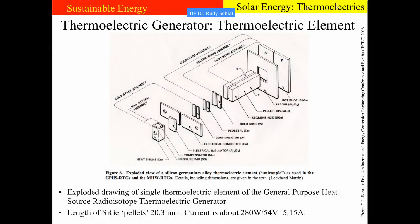Here you see an exploded drawing of a single thermoelectric element of this generator. The most important parts are the P- and N-type slabs of silicon germanium connected to N- and P-type doped silicon molybdenum hot shoes — this is where the assembly connects to the general purpose heat source. On the other end, the heat sinks are connected. This is a fairly massive thermocouple: with about 280 watts electrical output at 54 volts, that gives an amperage of about 5 amps, so these slabs need to be able to handle 5 amps.